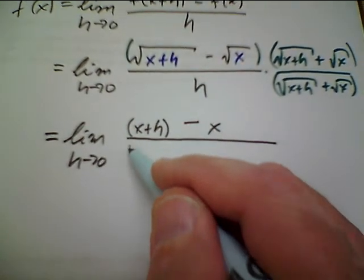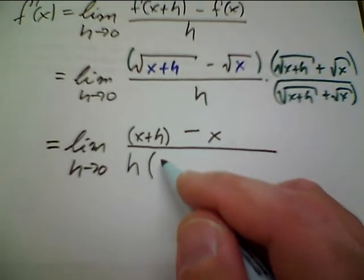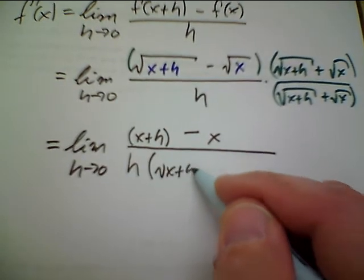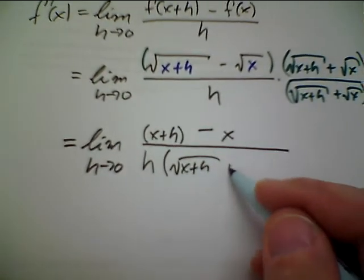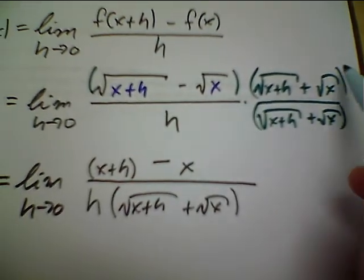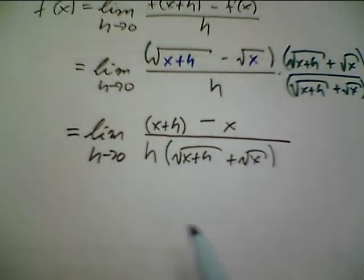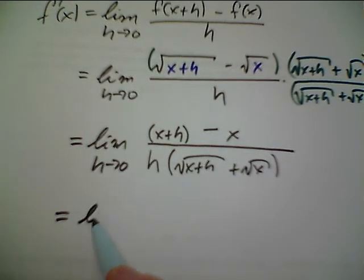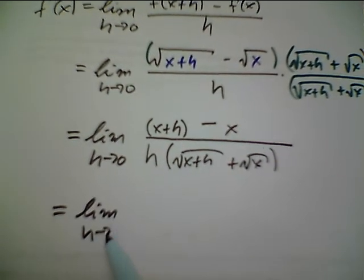And the denominator, the h carries, and I just bring this conjugate term over. So, notice that I haven't changed the value of the limit because I've just multiplied it by 1. So, it looks different, but the value has not changed.